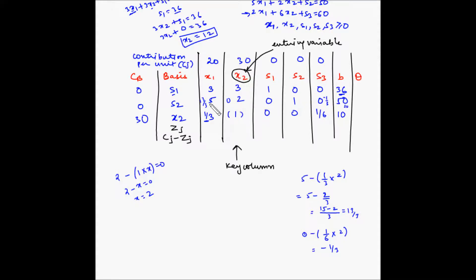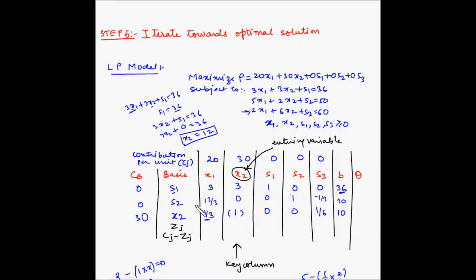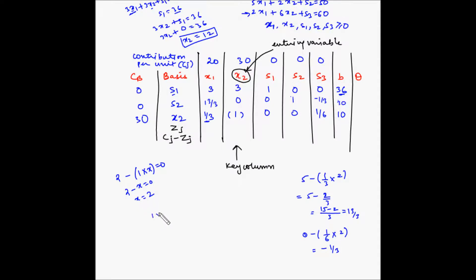So let me replace row S2 with the new elements. I have replaced row S2 with the new elements and as you can see, the element in the X2 column and S2 row is now 0. We have to do the same thing for the next row which is S1, making this element 0 by subtracting a multiple of the new key element. So 1 times x subtracted from 3 must give 0: 3 minus x equals 0, so x equals 3. The multiple is 3.